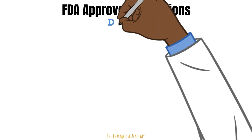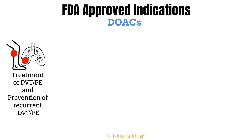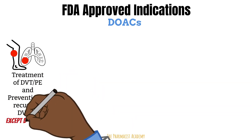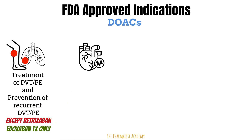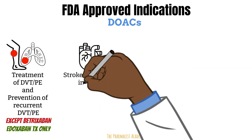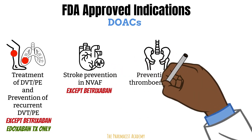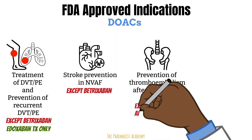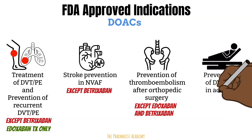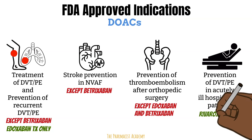Focusing only on FDA-approved indications: DOACs are used to treat deep vein thrombosis and pulmonary embolism and for prevention of recurrent DVT and PE — though this does not apply to dabigatran, and for edoxaban it's treatment only. They are also indicated for stroke prevention in patients with non-valvular atrial fibrillation, excluding dabigatran. DOACs are used to prevent thromboembolism after total hip or knee replacements, excluding edoxaban and dabigatran. Lastly, rivaroxaban and dabigatran are indicated for prevention of thromboembolism in hospitalized acutely ill patients.